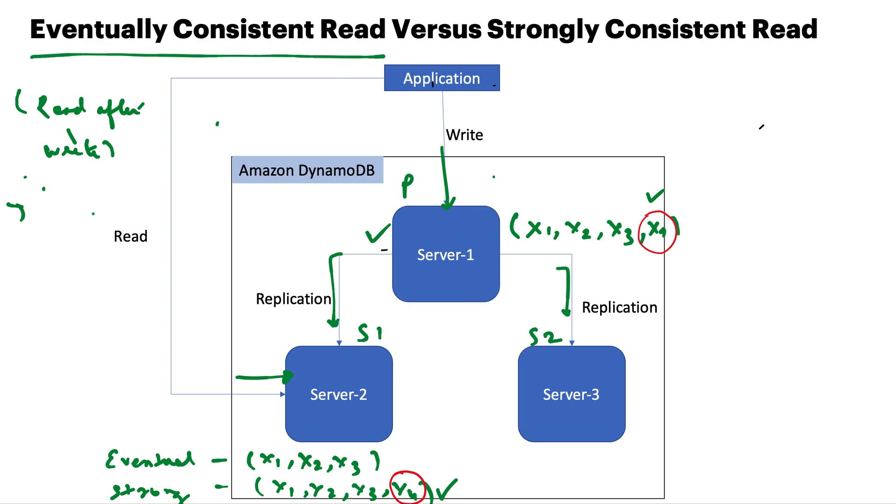read. It's called eventually consistent read. So if you read after write, the correct data is not guaranteed - you can get the right data, but it's not guaranteed, and that's the default property for DynamoDB. Now, the second scenario is if you want to ensure that you get the correct data